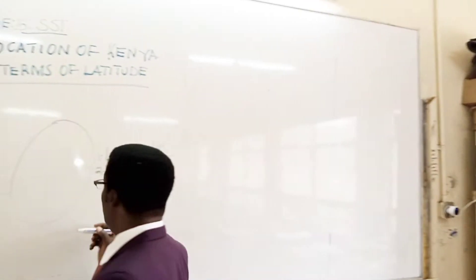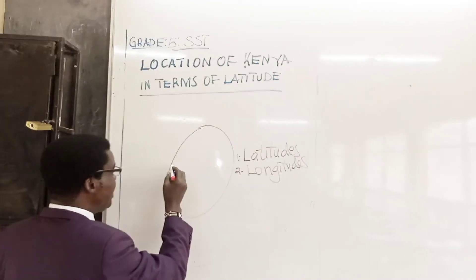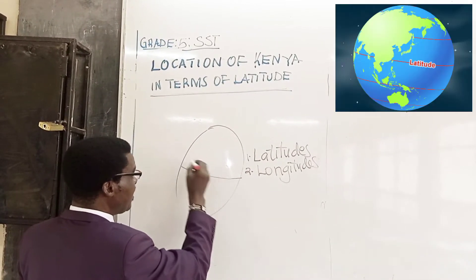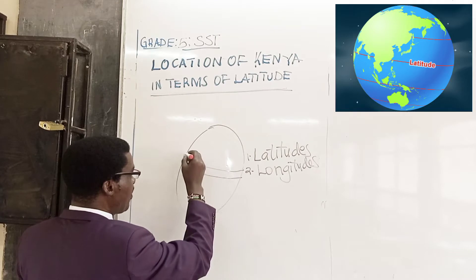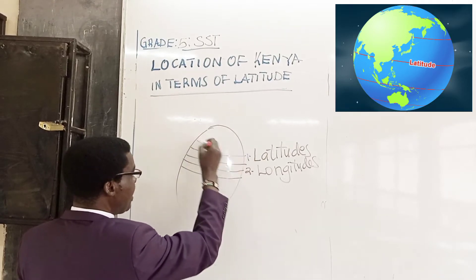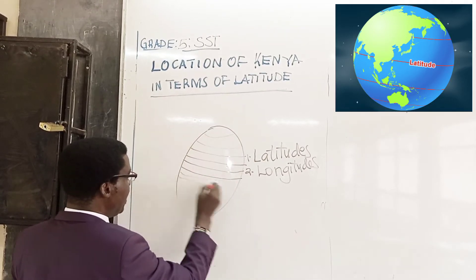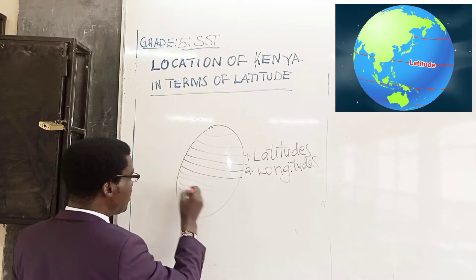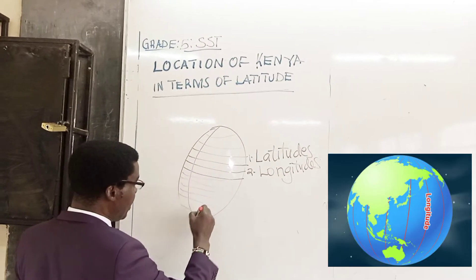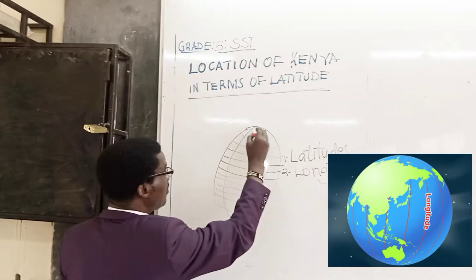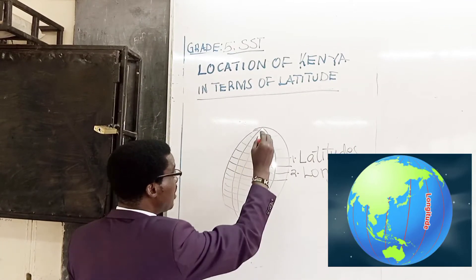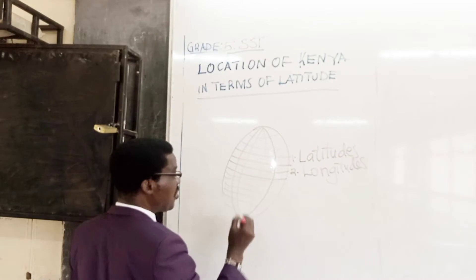Latitudes run from east to west — they move this way from east to west. And then longitudes run from the North Pole to the South Pole, like this. There are quite a number of them.